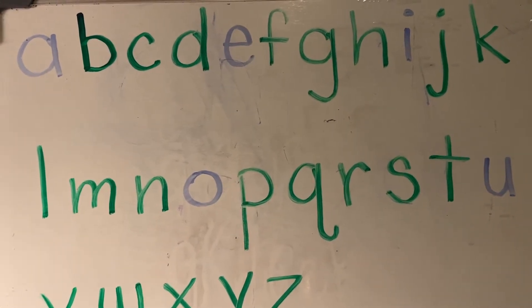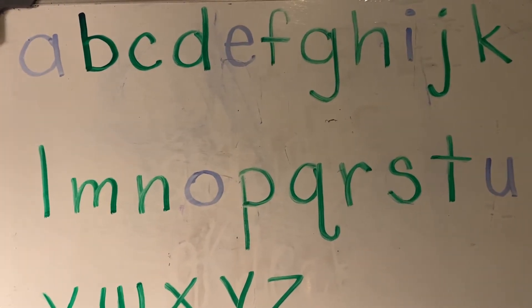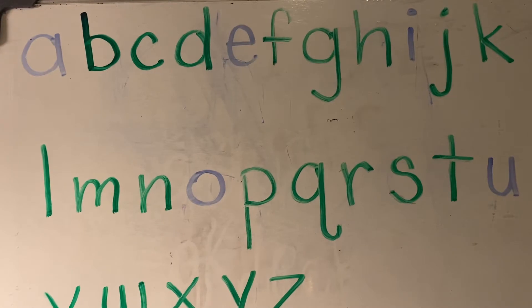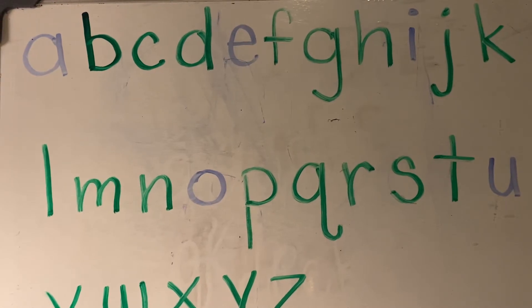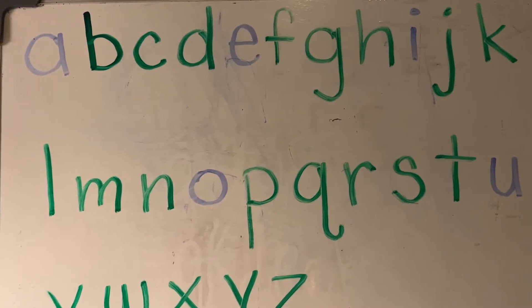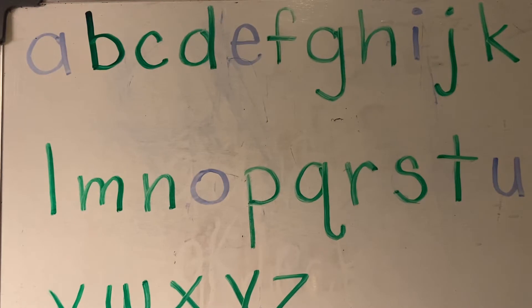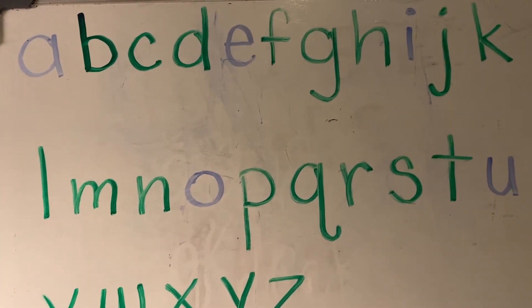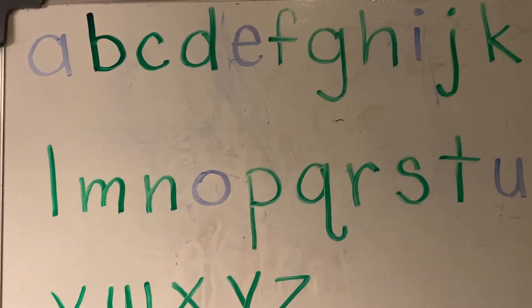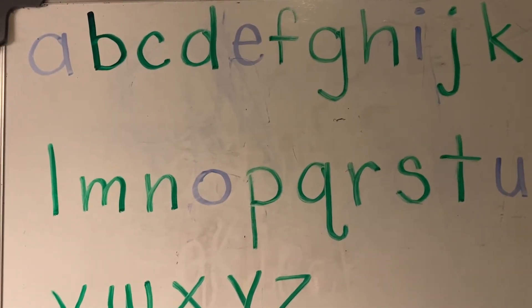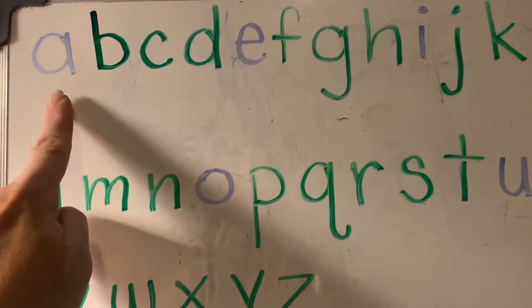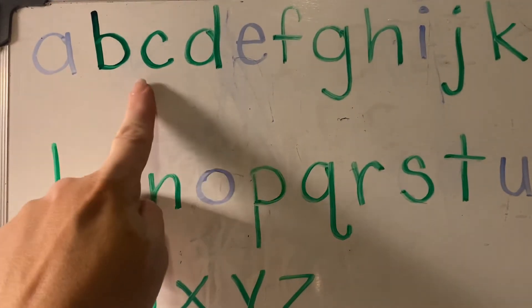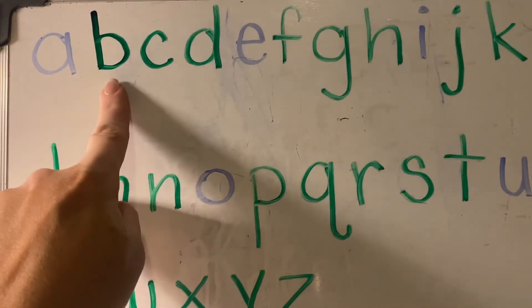We have been working on letter identification, and I just wanted to talk to you guys a little bit today about the different types of letters. You'll see that you've got the ABCs here in front of us, the entire alphabet, A through Z. If you notice, some letters are blue and some letters are green.